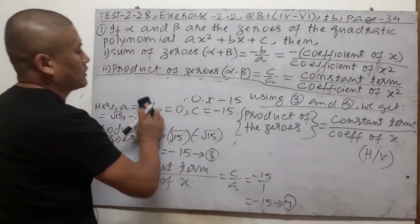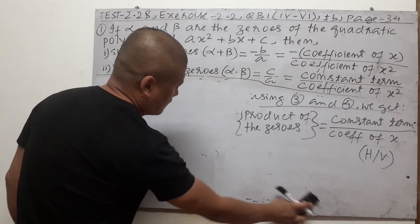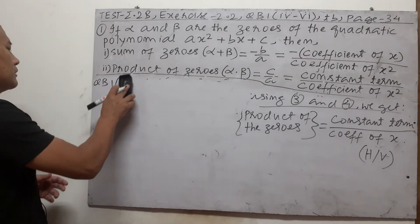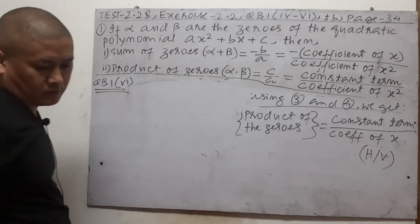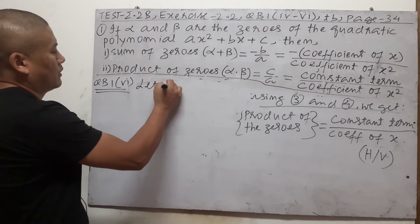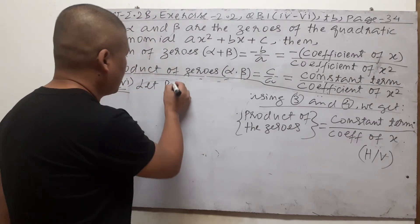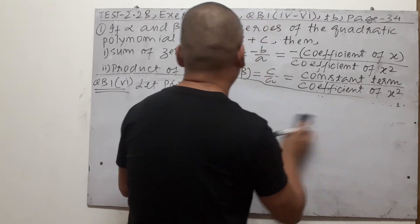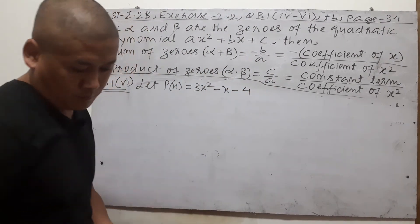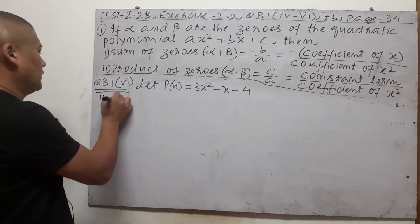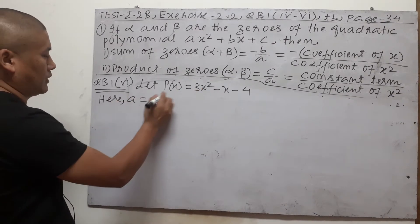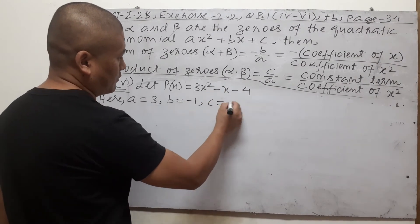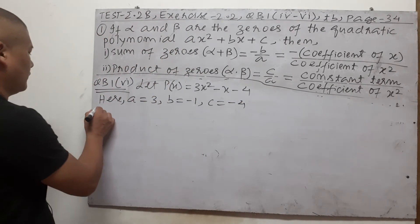One more question before we end test part 2.2b — question b1 subheading 6. Let p of x = 3x² − x − 4. We identify: a (coefficient of x²) = 3, b (coefficient of x) = −1 (no number means −1), c (constant term) = −4. Now the question asks us to find the zeros.